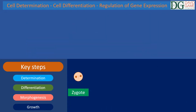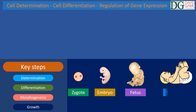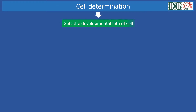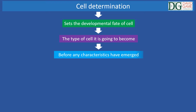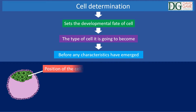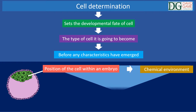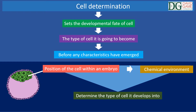Once the zygote is formed, cells start to divide by mitosis to bring about the development of an embryo, which then becomes a fetus and eventually a newborn. Determination is the process that sets the developmental fate of a cell and the type of cell it's going to become before any characteristics have emerged. This process occurs during embryonic development and the position of the cell within an embryo and its chemical environment will determine the type of cell it develops into. Cell fate is determined early on during a critical time period.